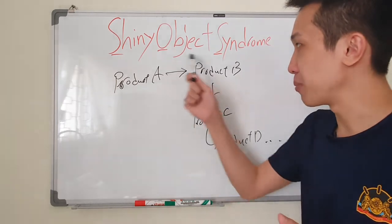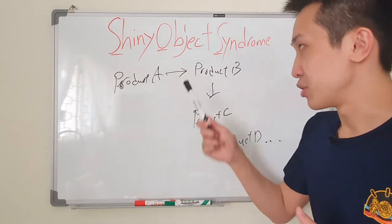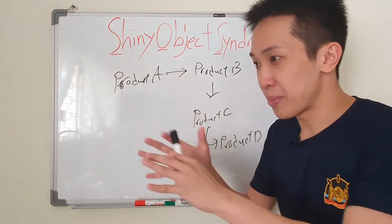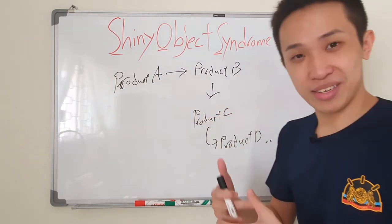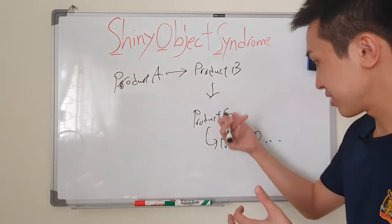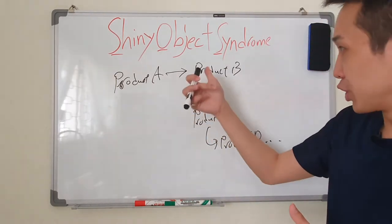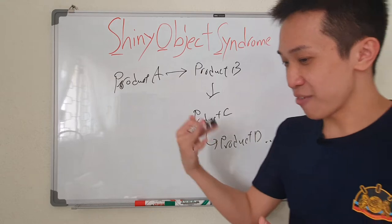You jump to product B, touch it a little bit, fiddle around with it, haven't spent much time with it, then product C appears and you jump to product C. The cycle goes on - you just go from A, B, C, D, E, F, G.